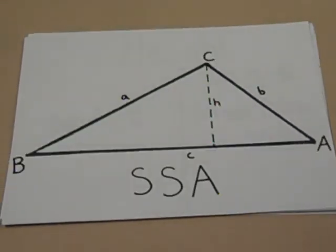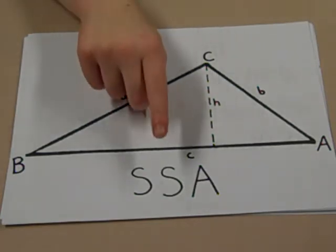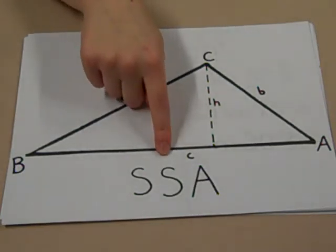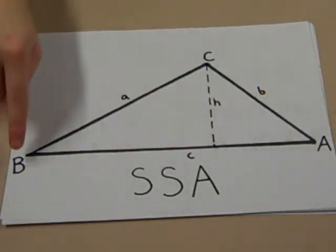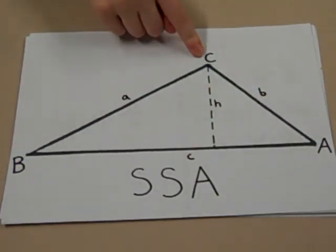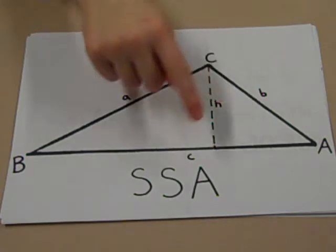We know two side lengths and one angle, which classifies it as an SSA triangle. To make it more understandable, we labeled all the angles A, B, and C, and all their opposite sides A, B, and C.